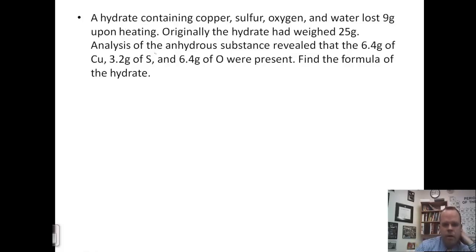So first, we need to find the formula of the compound made of copper, sulfur, and oxygen. You can probably get a good guess as to what this is going to be, but we're going to solve it out. We have 6.4 grams, 3.2 grams, and 6.4 grams. We need to change to moles.